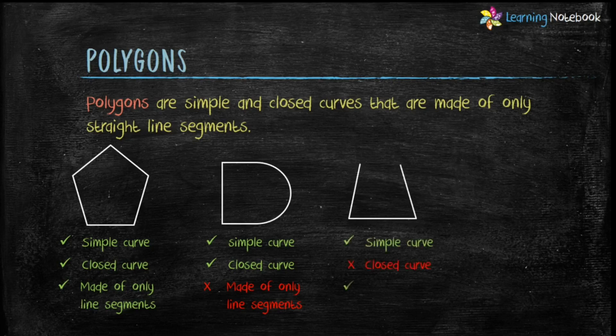Now, third figure is a simple curve made of only line segments but it is not a closed curve. Therefore, the third figure is not a polygon.